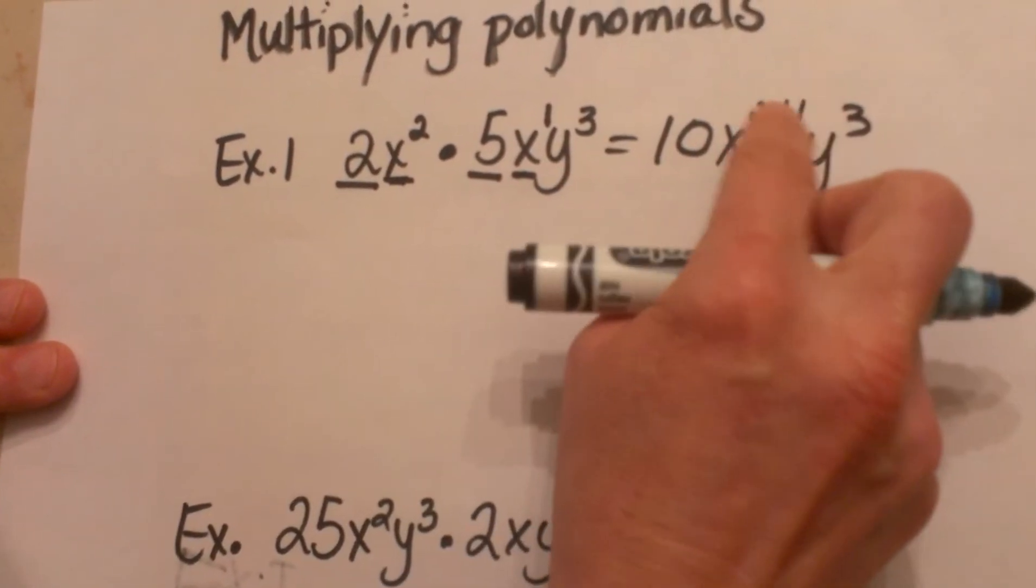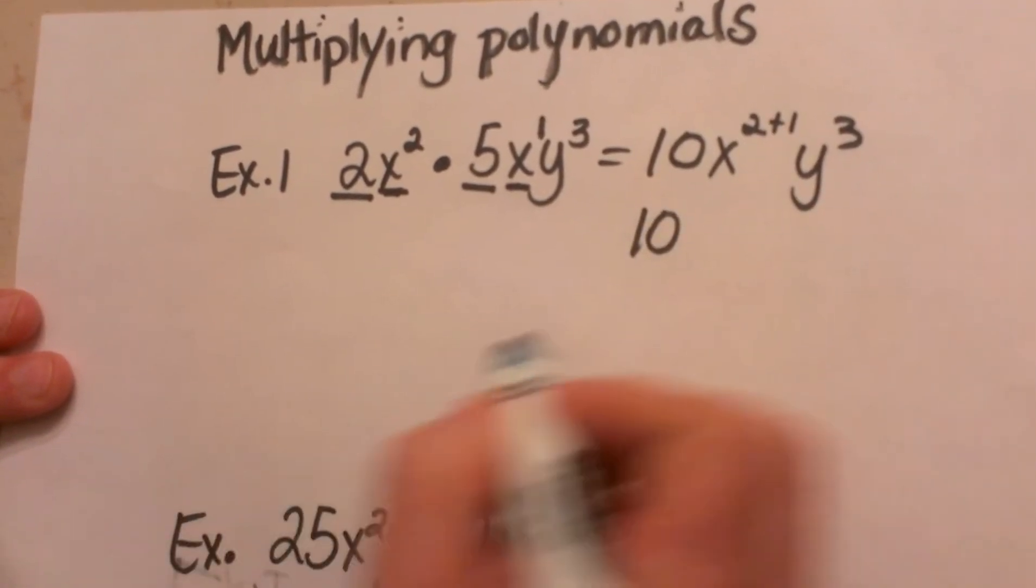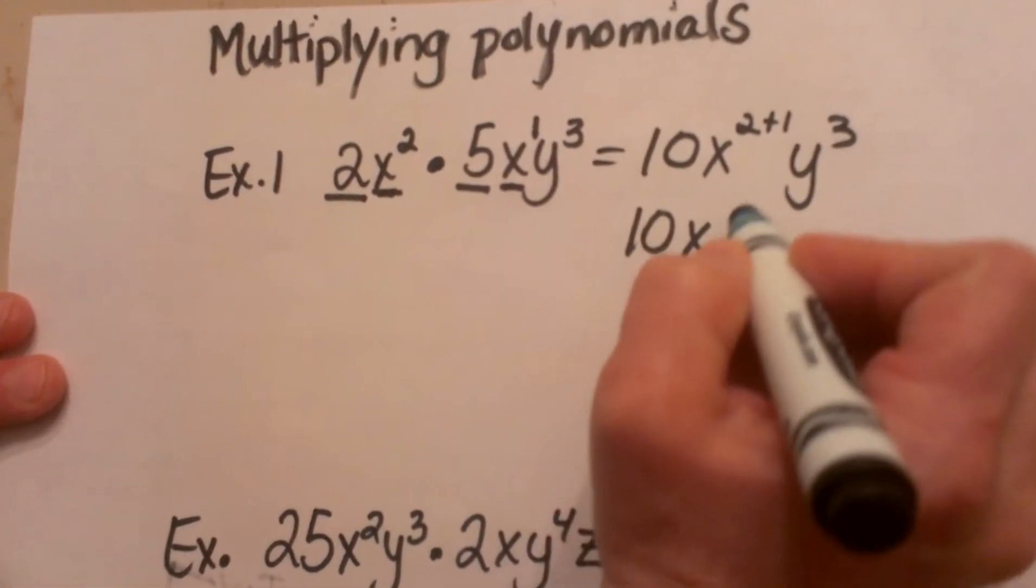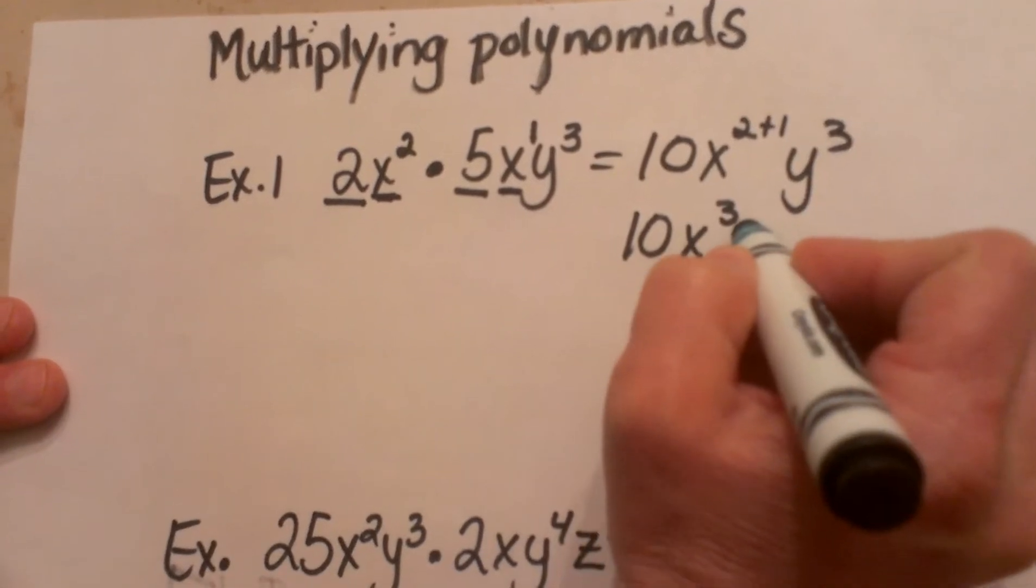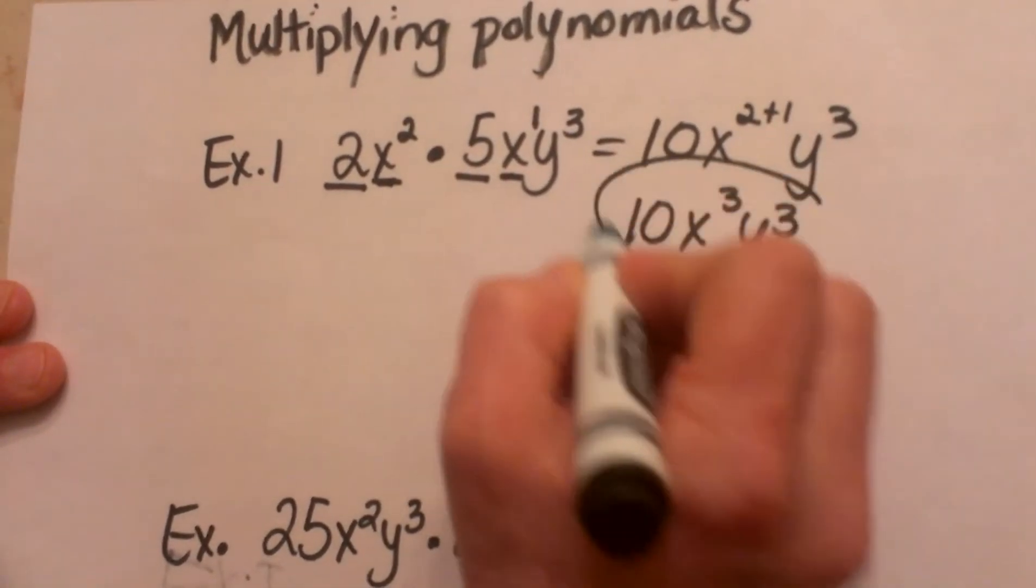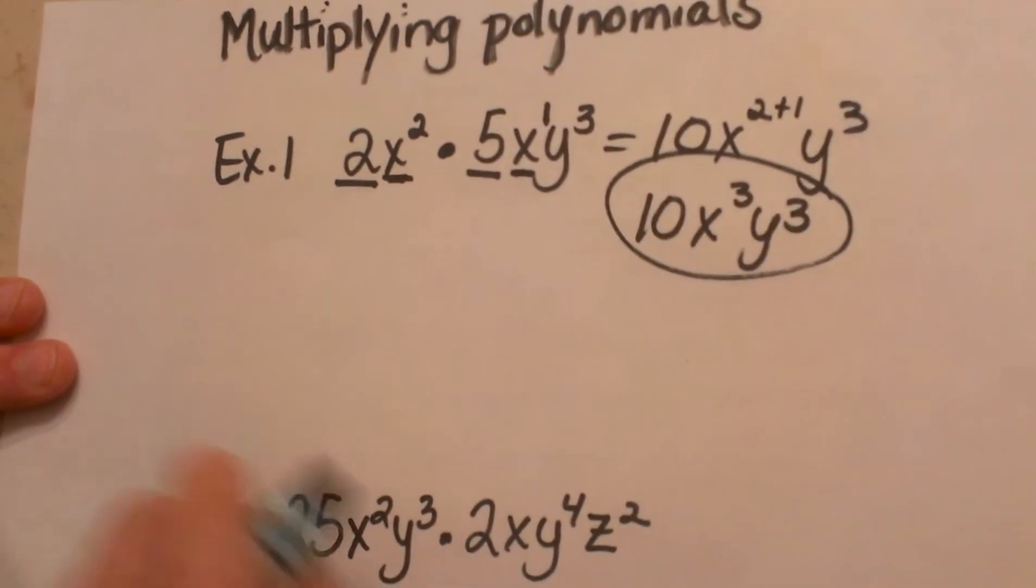So now let us just add those exponents together and simplify this. So I have 10 times x cubed y cubed and that is how you multiply polynomials together.